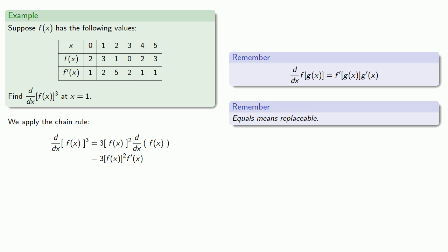Now I want to know this value at x equals 1. Equals means replaceable so I'll replace. And our table gives us the values of f of 1 and f prime of 1. So we'll use those values. Which gives us our derivative.